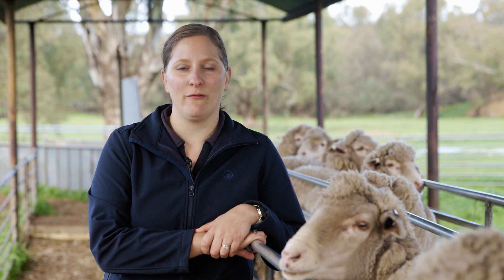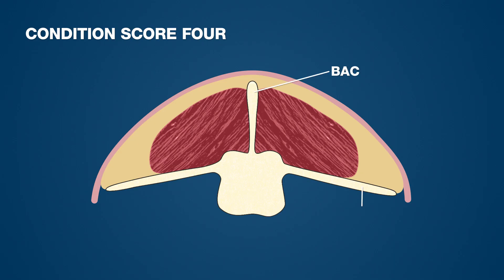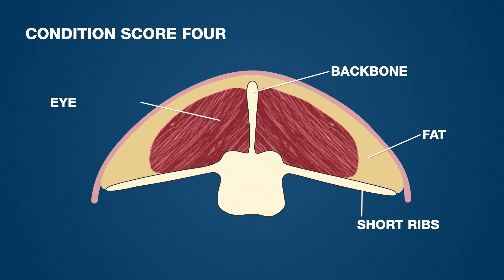Condition score 4 will have lots of muscle and fat cover. You'll feel the backbone and the short ribs if you press but won't be able to feel in between the bones. The eye muscle will be very full, making it rounded out from the backbone to the short ribs. Ewes in more than condition score 3.5 will have increased production but decreased profitability overall. These are tending towards over fat.